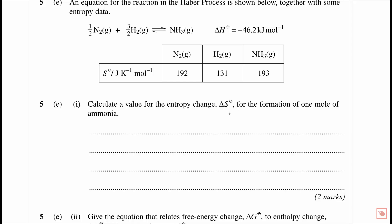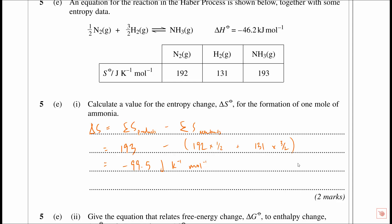Calculate the value of the standard entropy change for the formation of one mole of ammonia. The equation is given with molar entropy values. Delta S equals sum of entropy of products minus sum of entropy of reactants. Products: ammonia is 193. Reactants: nitrogen is 192 times a half, added to 131 times three halves. This gives a value of minus 99.5 joules per Kelvin per mole. That's two marks — really easy.